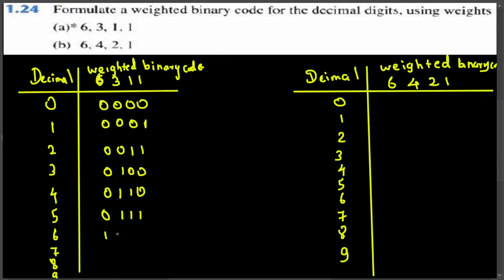For six, that is 1000. For seven, six plus one gives either 1010 or 1001 — both are valid. For eight, that is 1001 or 1000 — and that completes the conversion from decimal to weighted binary code for the 6-3-1-1 code.